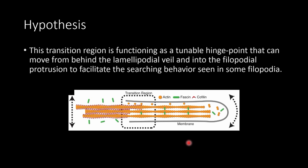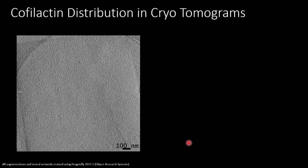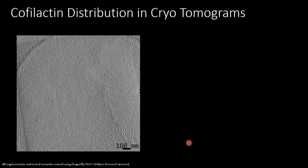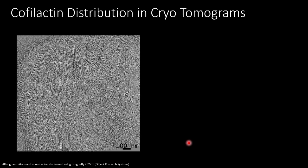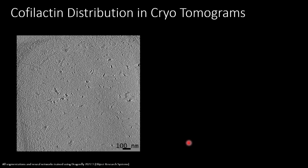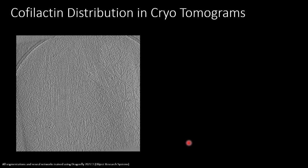This is where my project came in. We had this novel finding and five years of tomographic data, and my PI wanted me to characterize the cofilactin distribution across all of it. This was a huge project because the gold standard for segmenting cryo-tomographic data is hand segmentation. I quickly pivoted to deep learning because segmenting this data by hand — given how incredibly dense the actin mesh is — would have been insanely time-consuming.